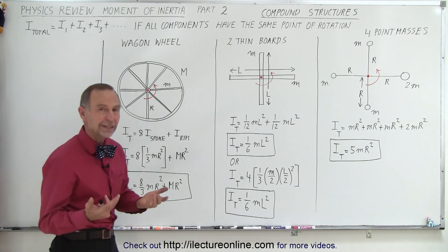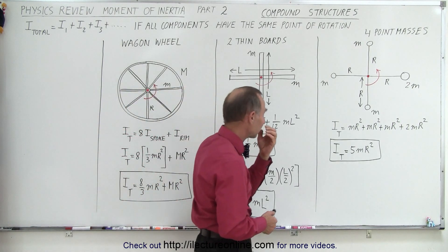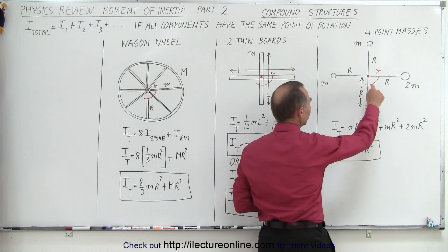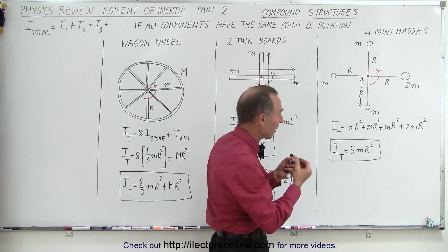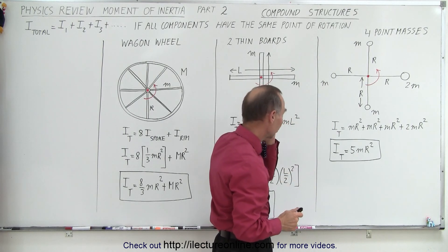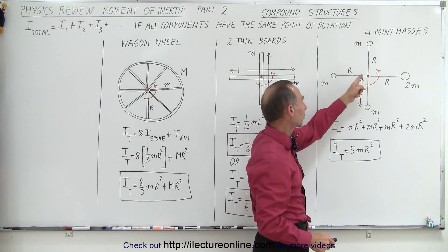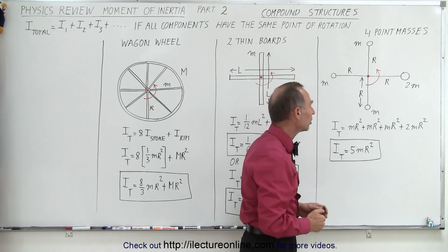So let's take a look at three typical examples. Here we have four point masses, all attached to the same point of rotation, let's say with a light rod or a light string, so we don't have to worry about the mass of the rod or the string. The radius is the distance from the point of rotation to each of the masses, which is r.